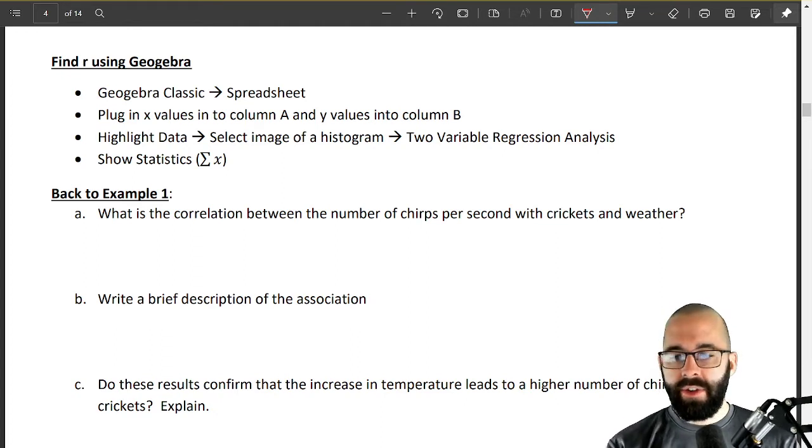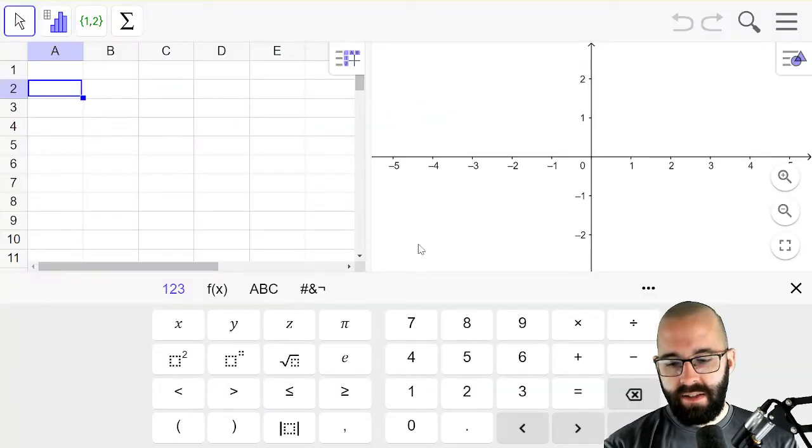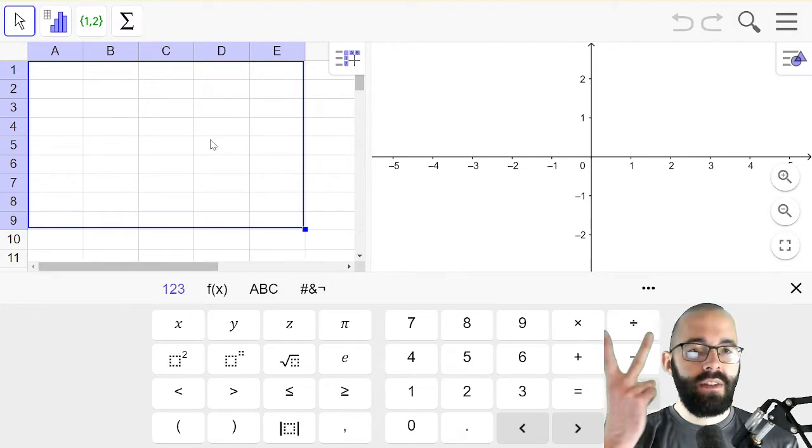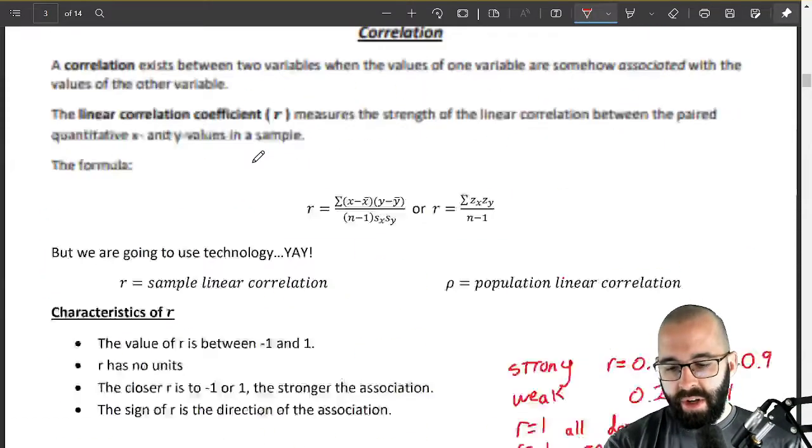The chirps per second and the crickets, we're going to input these into Geogebra Classic. Specifically, we're going to go back to that spreadsheet just like we used in previous units when looking at single variable data. Now we have two kinds of data that we're going to talk about together.